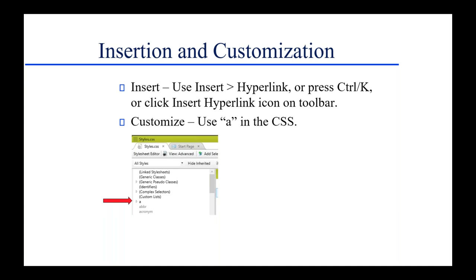What if you want to customize how this hyperlink appears? You would go into the CSS. When I ask training classes what code controls the hyperlink, the answer is the letter A. When Tim Berners-Lee came up with HTML, he decided that a link was a link from one topic to an associated topic — therefore, a link is associative, ergo the letter A, in case you've wondered.